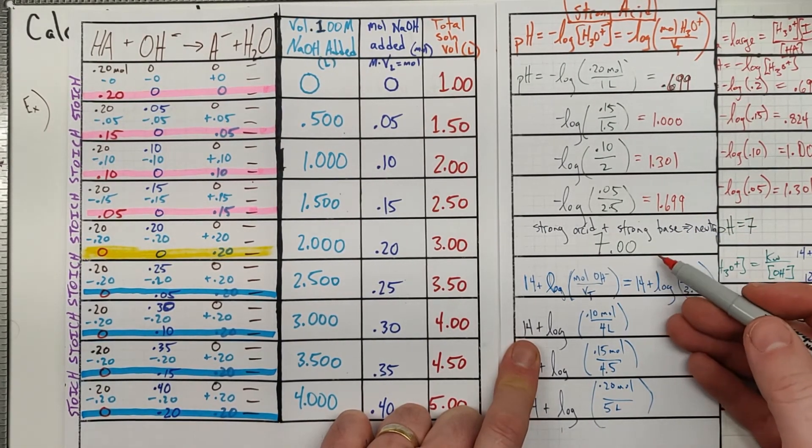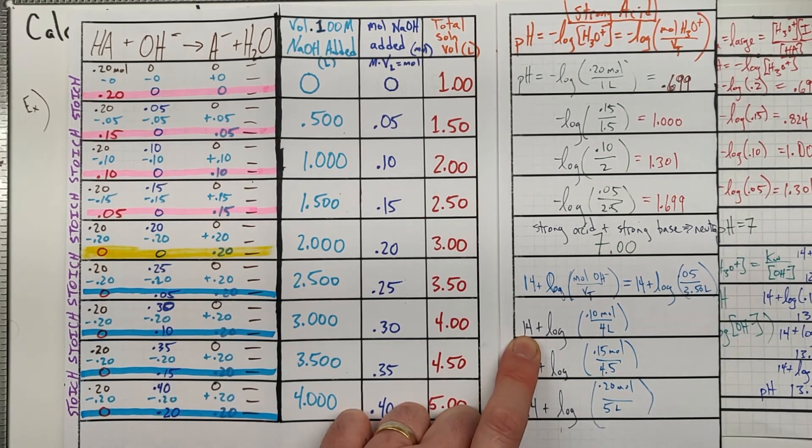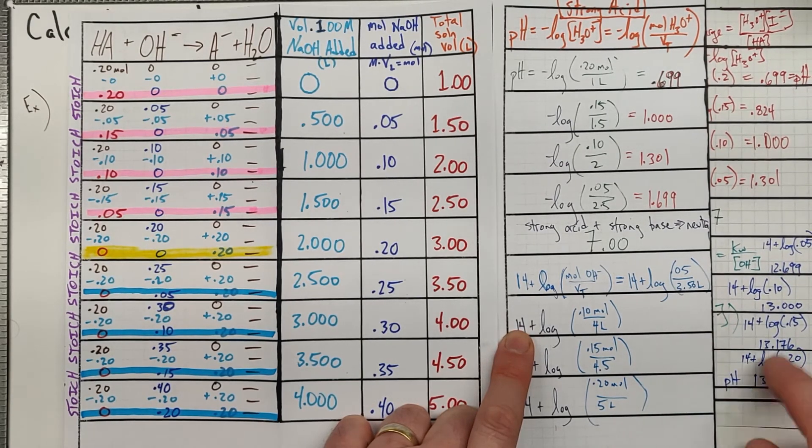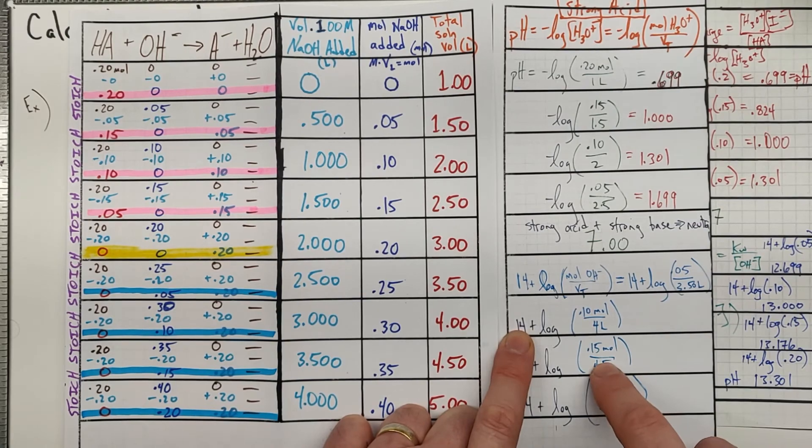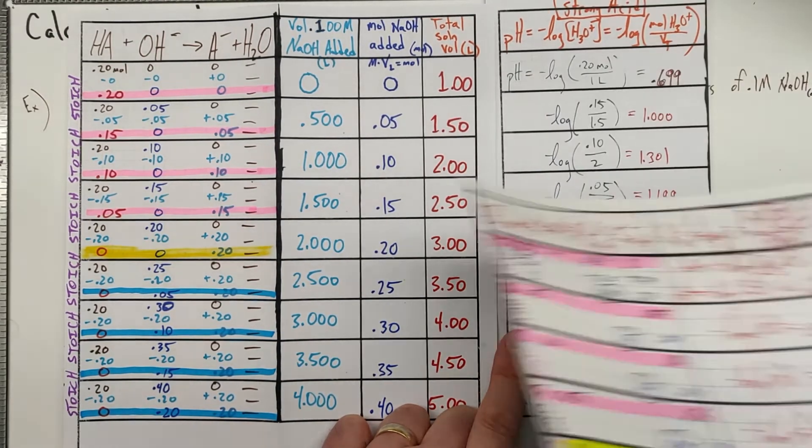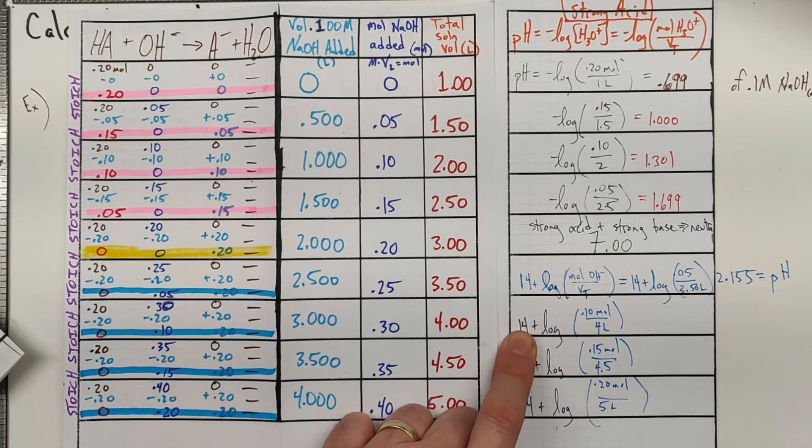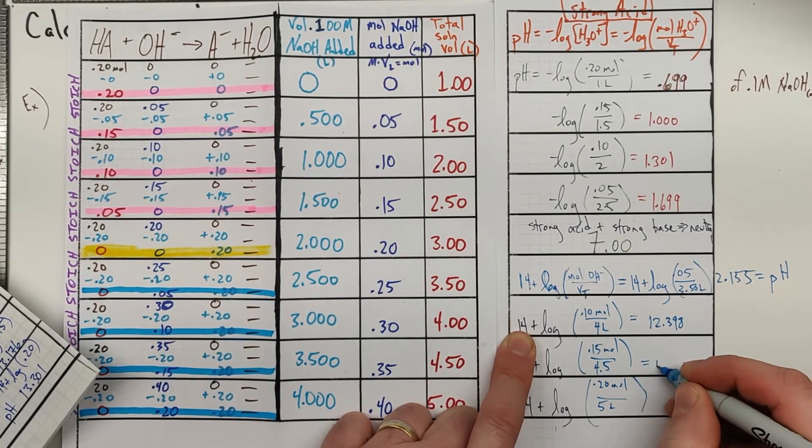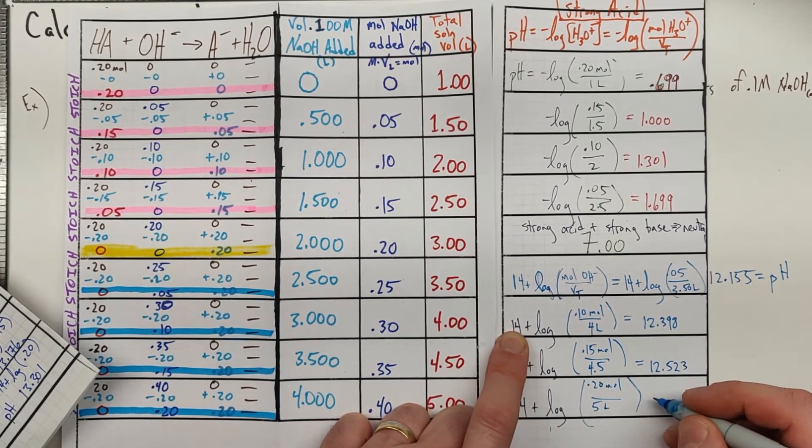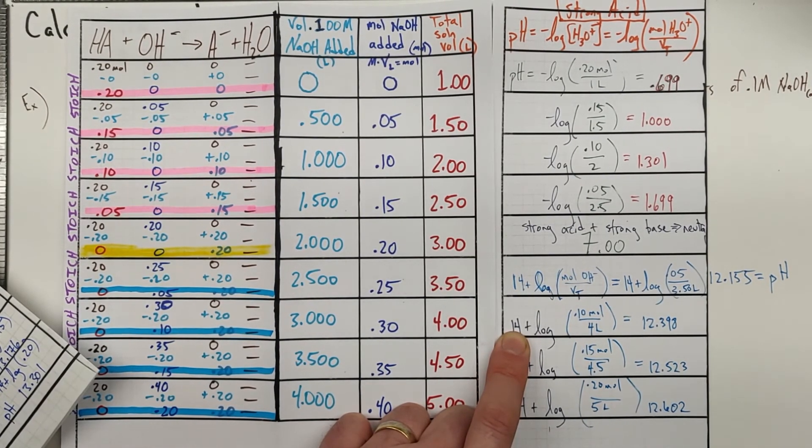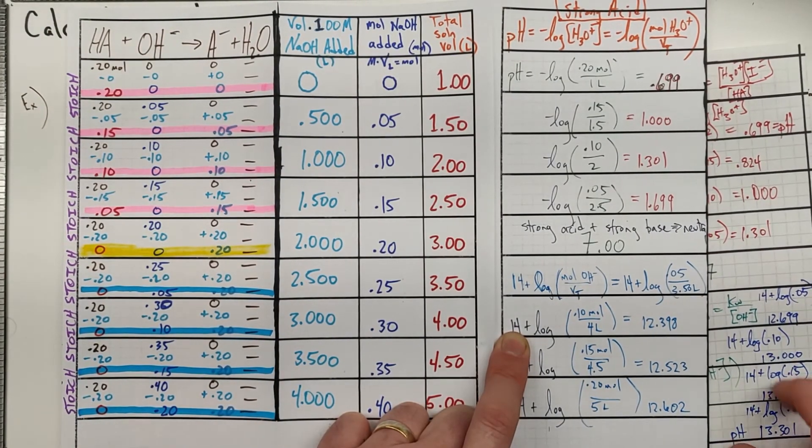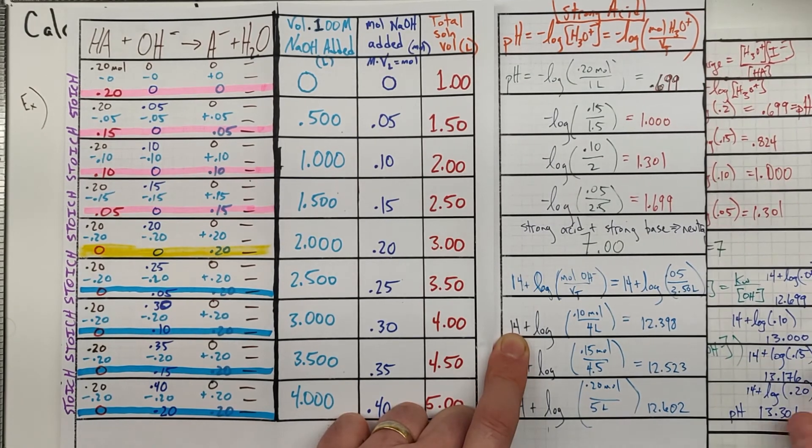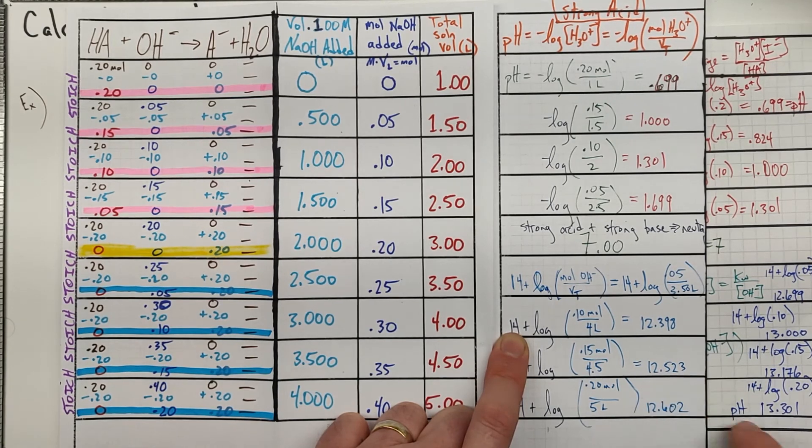And you'll notice some number similarity there. 1.699, we still have our 7 right there because a strong acid and a strong base are giving us a neutral solution. Instead of 14 plus log of 0.05, we did 14 plus log of 0.05 over 3.5. Similarly, not 0.1, 0.1 over 4, 0.15, 0.15 over 4, 0.20, 0.20 over 5. In our basic solutions, we end up with 12.398, 12.523, and 12.602. Glancing at those other pHs from the previous calculations, 12.699 went down to 12.1, less basic as it's more dilute. 12.13 went down to 12.3, 13.1 to 12.5, and 13.3 to 12.6.